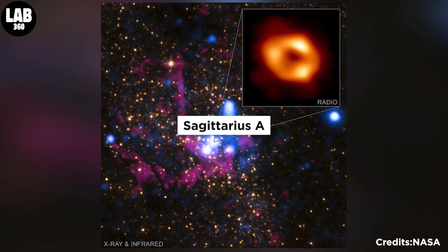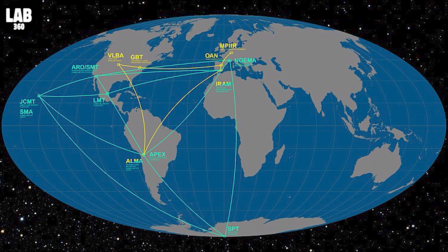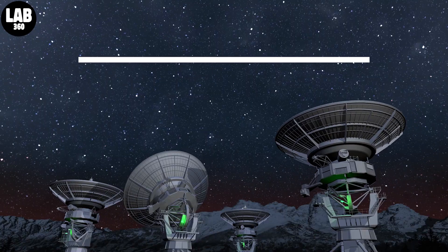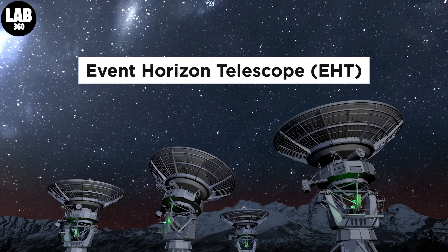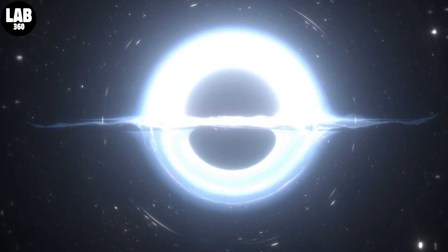The historic image of Sagittarius A, taken by a global telescope array known as the Event Horizon Telescope, EHT, indicates a black hole in the Milky Way's heart which is feasting on hydrogen gas.